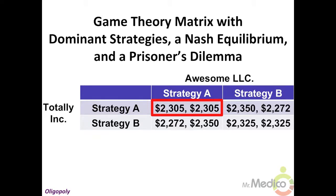More specifically for this course, duopoly behavior. One of your goals is to determine a firm's dominant strategy, or best strategy regardless of an opposing firm's strategy. This will help you find the Nash equilibrium. When reading a game theory matrix, the firm on the left has its payouts on the left in each cell, and the firm on the top typically has its payouts on the right in each cell.